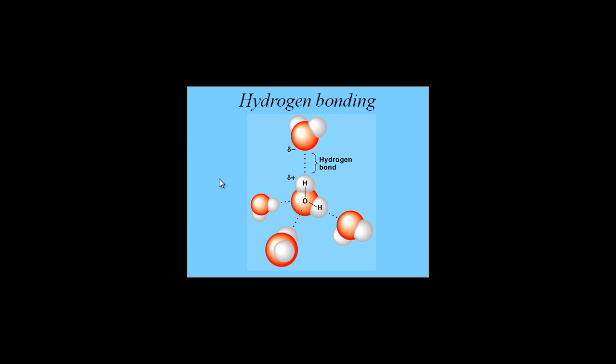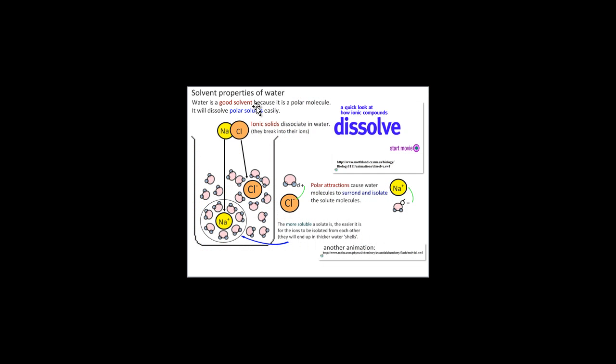water can actually dissolve many ionic compounds, such as salts and other polar molecules like sugar as well. So basically, it's a good solvent because of its polar nature. So here we've got an ionic compound, this is obviously sodium chloride. And we can see that as an ion, the chlorine ion, the slightly positive sections of water molecule are attracted and surround the chlorine ion